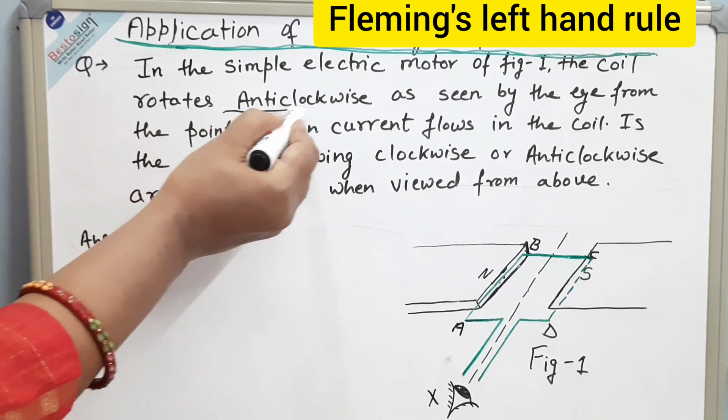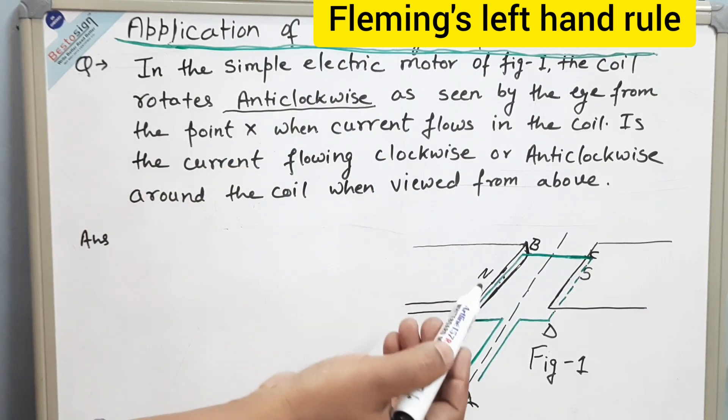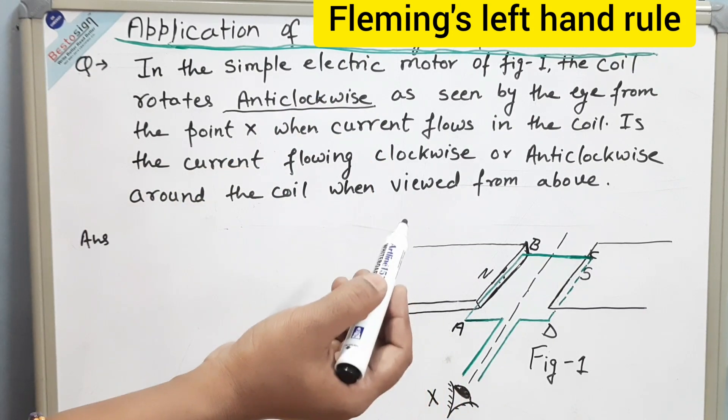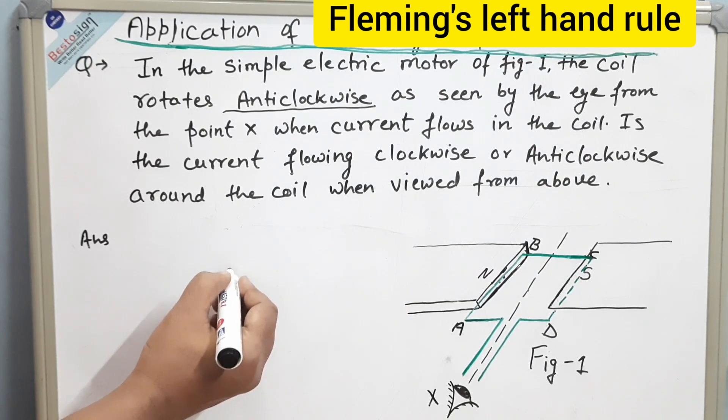So, the coil is rotating anti-clockwise. For the anti-clockwise movement, the side cd should go up and ab should go down. Now I will draw this coil over here.